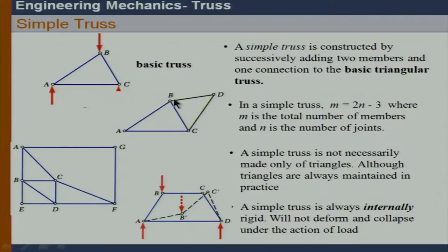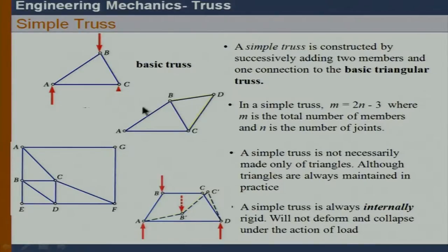How is the simple truss formed? If we successively add two members and one joint — so B-D and C-D have been erected from the basic triangle, connected by pin D — we can erect another two members D-E and C-E connected by a pin. Keeping doing this operation, we will eventually form a simple truss. Most importantly, a simple truss is always internally rigid — a very important concept.